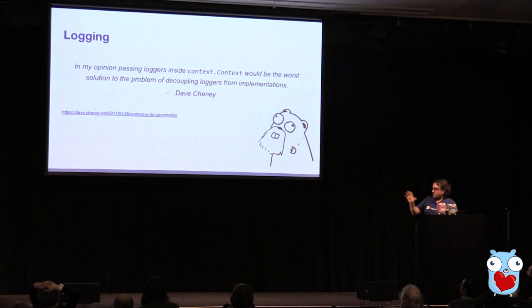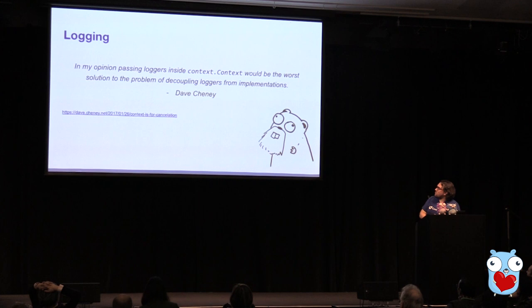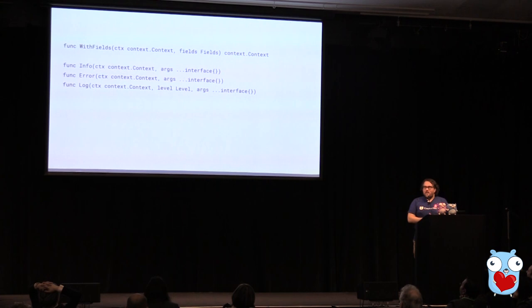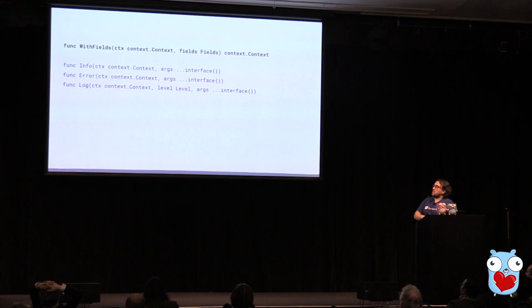Now, there are a lot of opinions on using context out there. Probably my favorite quote on this topic specifically is Dave Chaney, who has a blog post on using context values and mentions: "In my opinion, passing loggers inside context.Context would be the worst solution to the problem of decoupling loggers from implementation." Obviously I take a pause when I find a blog post that says not only is that a bad idea, but it's definitively the worst idea. So let's come back to this in a second. Looking at what our API actually looks like — if you're familiar with Logrus, it's basically Logrus with context appended at the front. We have the ability to create a new context with logging fields. You pass a parent context and some field data, and you get a new context back out.